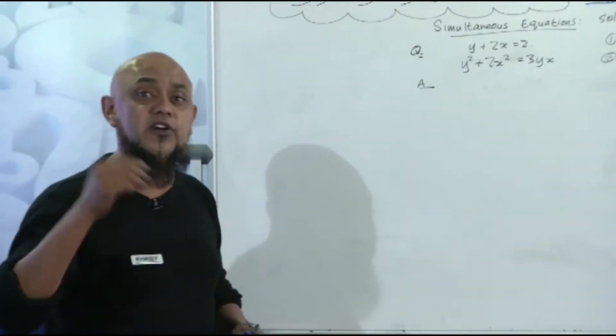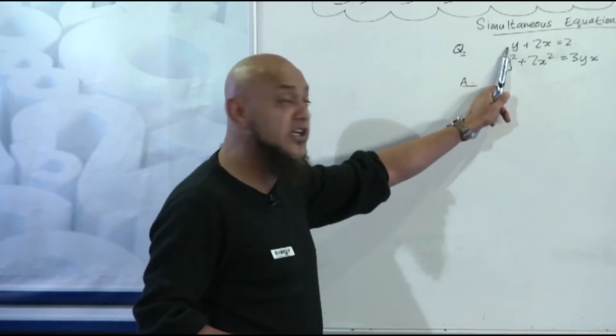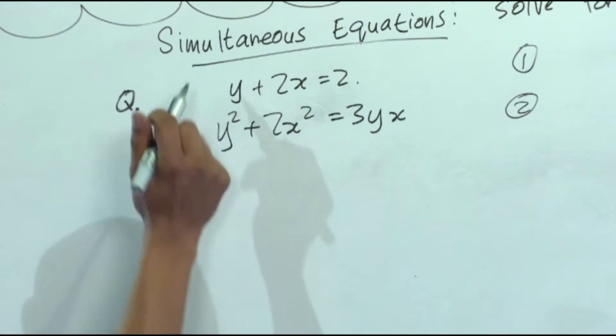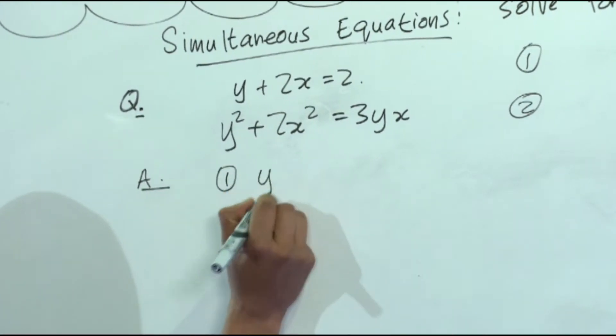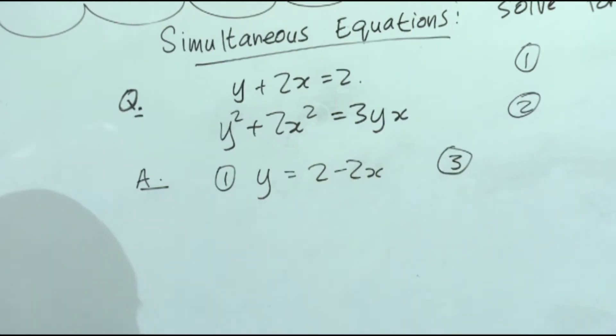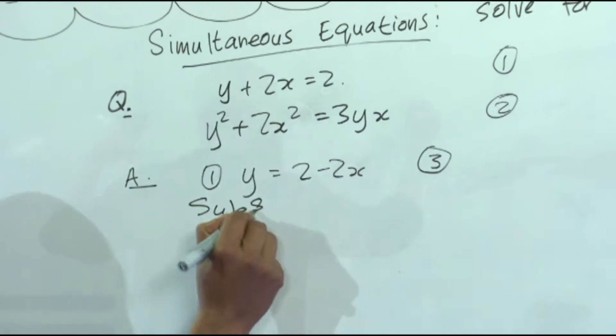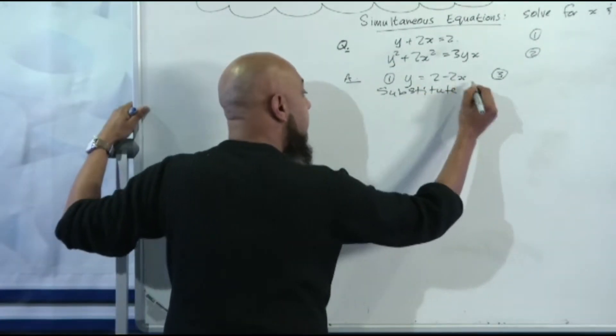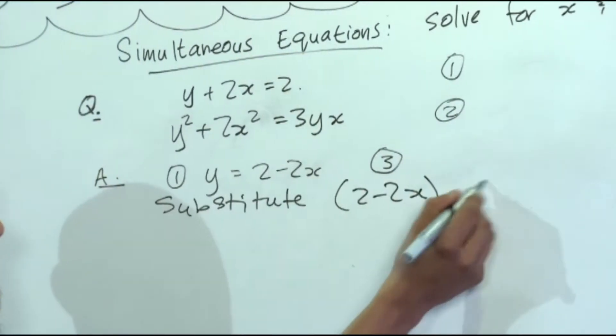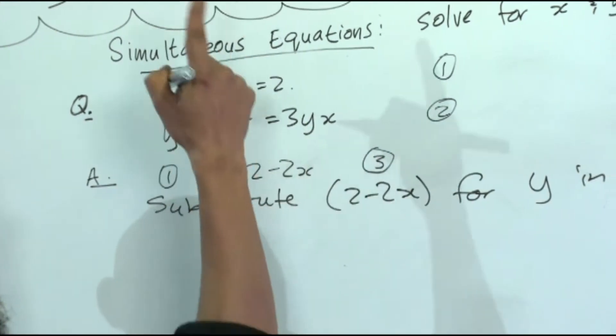What are we going to put it in terms of, y or x? Why? Because the coefficient of y is 1. So let's start with equation number 1. We're going to say y is equal to 2 minus 2x. If you want to, call it equation number 3. Now we say substitute 2 minus 2x for y in equation number 2.